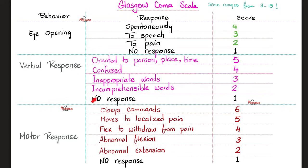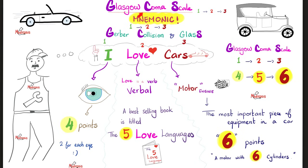How can you memorize all of this? Remember the Glasgow Coma Scale mechanic who works at Gerber Collision and Glass. The mnemonic is 'I love cars' — 1, 2, 3, 4, 5, 6. 'I' stands for eye opening: 4 points total. 'Love' — remember the 5 love languages — so 5 points for verbal response. 'Cars' — cars have a motor — so motor response is 6 points: 1, 2, 3, 4, 5, 6.